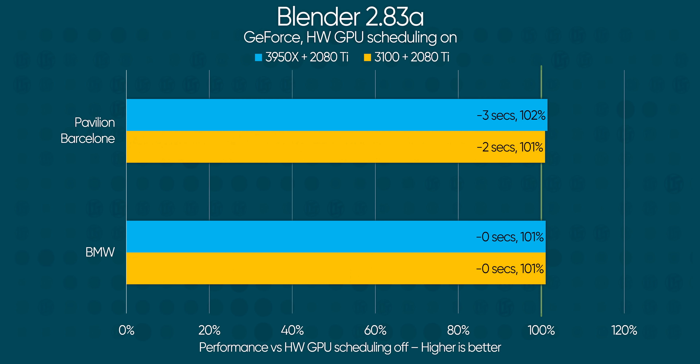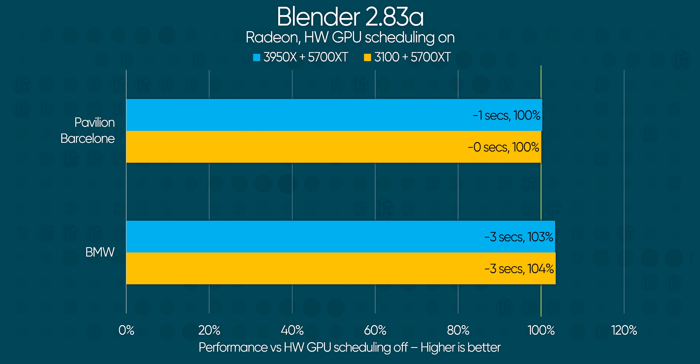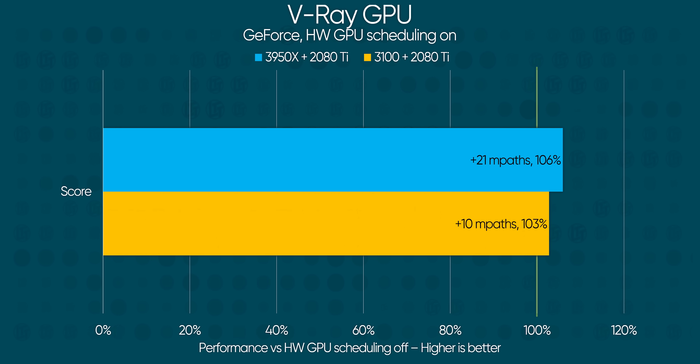In productivity, both of our CPUs and both of our GPUs saw anywhere from slight to notable performance improvements, with the Blender BMW test getting more out of hardware GPU scheduling with AMD's OpenCL implementation versus Nvidia's CUDA. Conversely, V-Ray, which only ran on Nvidia hardware, shows a tangible improvement, which gives us some level of confidence that hardware GPU scheduling should be a boon to productivity-minded folk going forward.